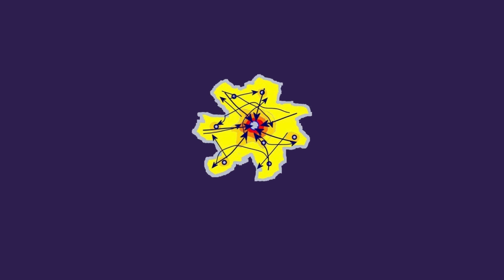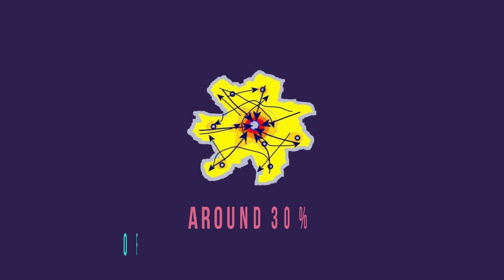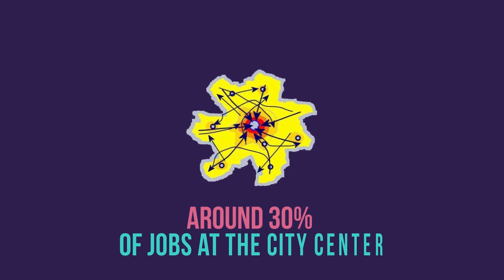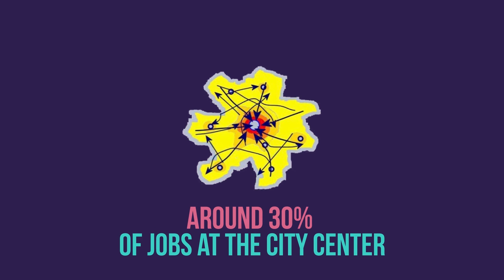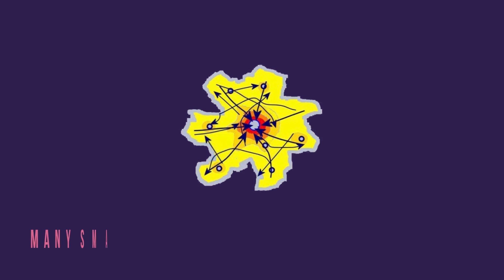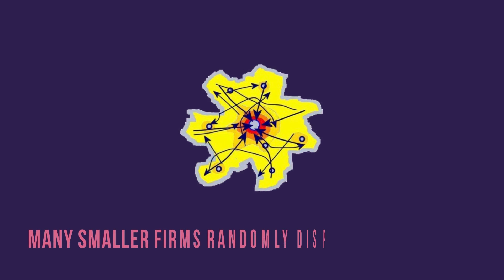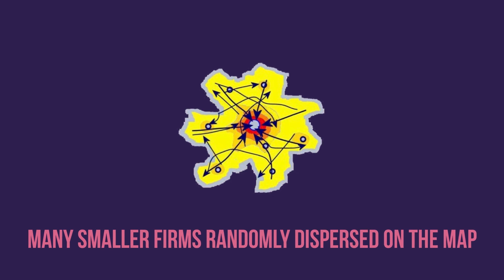The composite model. This is the model that all big cities in the world roughly follow. It has most of its jobs concentrated in a city center without exceeding 30% of its labor force, and it has many smaller firms randomly dispersed on the map.